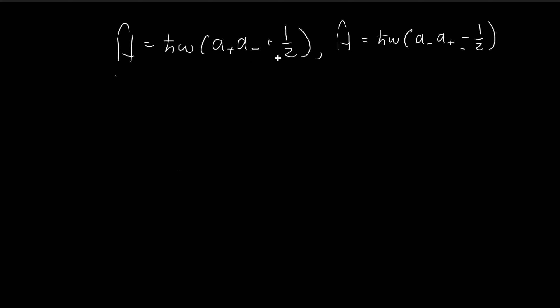In the last video, we proved a very important result: that the Hamiltonian operator can be expressed in one of two ways, in terms of the a-plus and a-minus operators. As usual, what we proved in the last video will come in handy in the next step of our derivation.